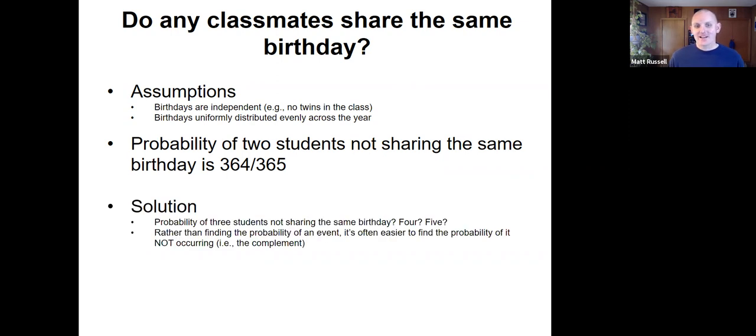So the solution here is to find out a couple of things. Well, we know if two people share the same birthday, we can quantify that. But what about the probability of three students sharing the same birthday? How about five? How about four? How about 20 like in our virtual class?